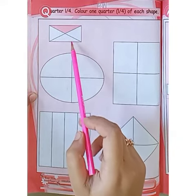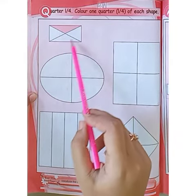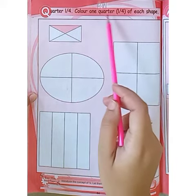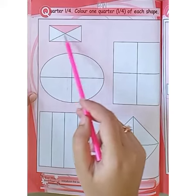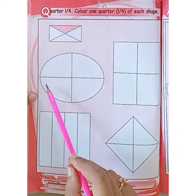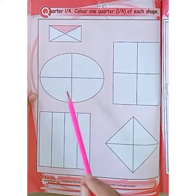This is a rectangle shape and it has four equal parts. So we have to color one quarter of each shape. Here the one quarter of this shape is already colored. So look at the next.